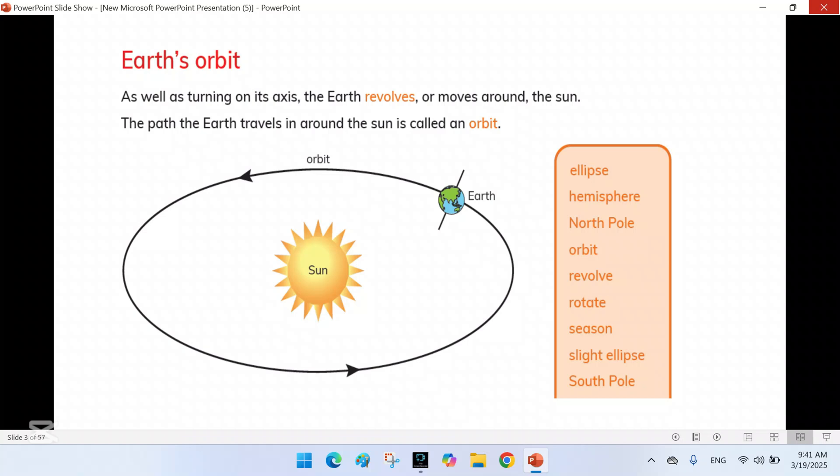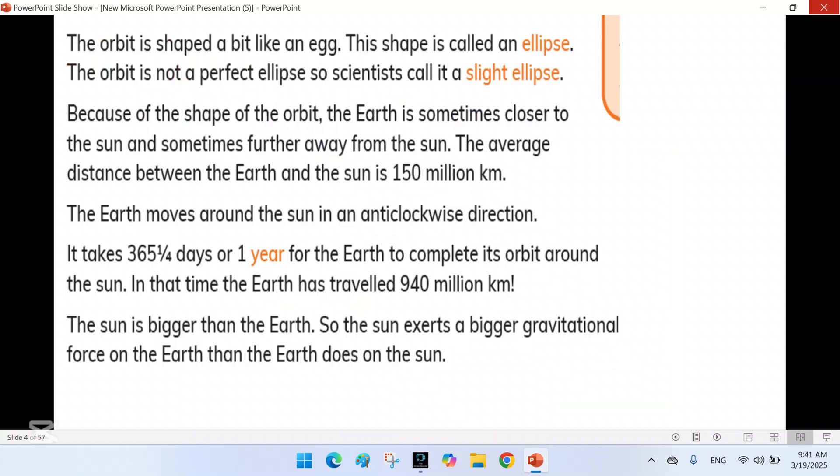On average, the distance between Earth and the sun is about 150 million kilometers. It takes the Earth approximately 365 days, or one year, to complete its orbit around the sun. During this time, the Earth travels a distance of about 940 million kilometers.